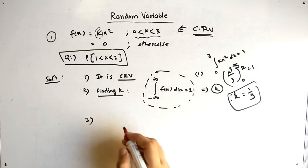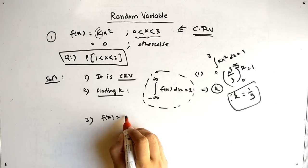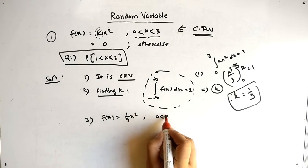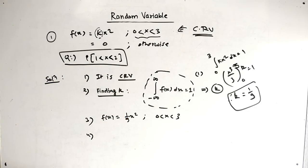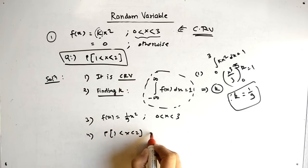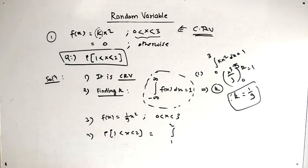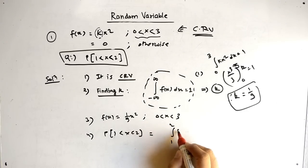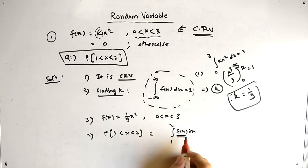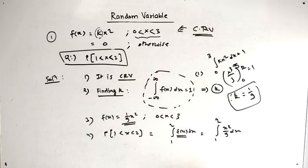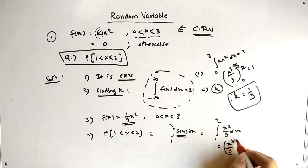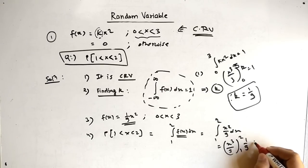So our first step is clear — we have small f(x) equals (1/9)x² where x ranges from 0 to 3. Now for finding the probability, since a range is given we integrate from 1 to 2: integral of f(x) dx from 1 to 2, substituting f(x) gives integral of (x²/9) dx from 1 to 2. Solving gives x³/3 times (1/9) evaluated from 1 to 2.